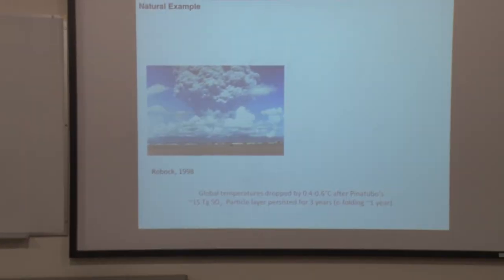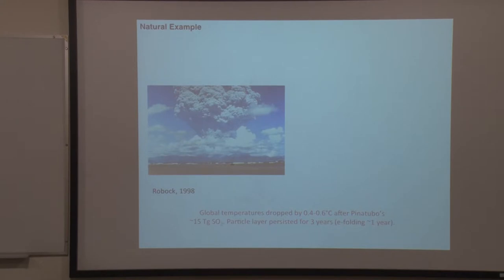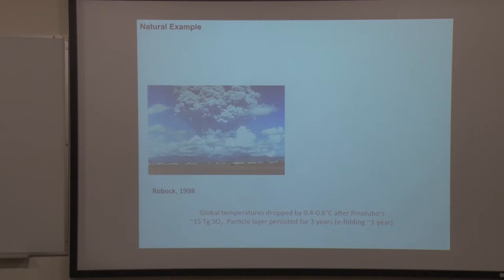What Paul Crutzen and many original studies draw from is a natural example: Mount Pinatubo erupting in the early 1990s. Pinatubo hoisted about 15 teragrams of sulfur dioxide into the stratosphere, which reacted to form sulfuric acid and then particles. Those particles dropped the global temperature by about half a degree C for about a year and a half. There's a folding time as particles slowly fall out — on average they live about a year, with some transient effects still visible about three years later.